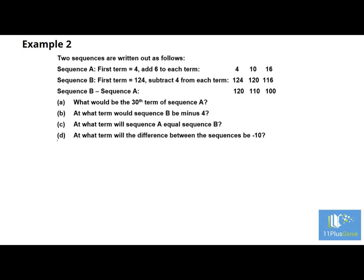Example 2. Two sequences are written out as follows. Sequence A: first term equals 4, add 6 to each term — giving 4, 10, 16. Sequence B: first term equals 124, subtract 4 from each term — giving 124, 120, 116. Sequence B take away sequence A gives 120, 110, 100.